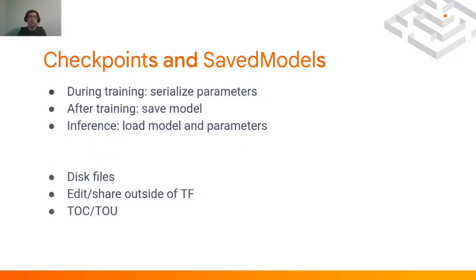At a higher level, I have a model that uses multiple ops, and first I need to train it on some data. Because training can take a long time, I sometimes want to save the status — if something happens and training gets interrupted or I need to restart with different parameters. Saving the state of the model during training creates a checkpoint, serializing only the parameters while the computation graph stays the same. After training completes, I can save the entire model into a SavedModel, which contains both the parameters and the entire computational graph serialized as a protocol buffer. At inference, I can load the model and parameters from the SavedModel directory, or load the model from a SavedModel and the parameters from another checkpoint to use the one that gave the best accuracy during training.